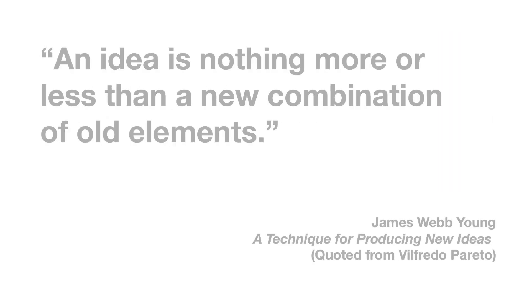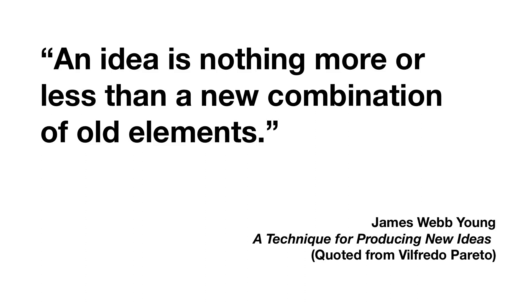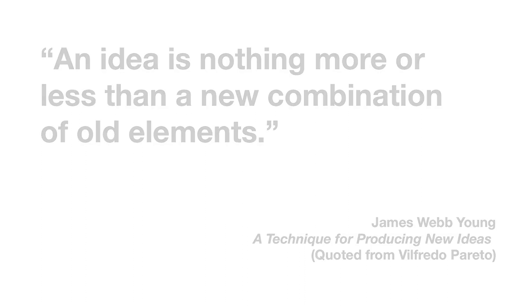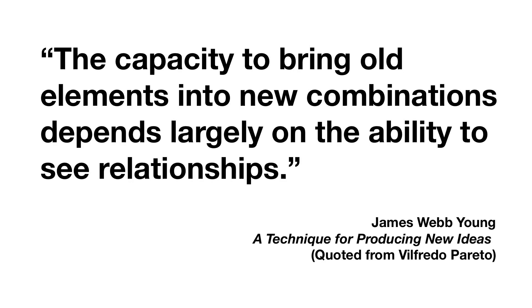James Webb Young writes about the process of brainstorming in his book, A Technique for Producing New Ideas. In this book, he provides two general principles that govern the generation of new ideas. The first is that ideas are nothing more than new combinations of old elements. And second, the capacity to make new combinations depends on the ability and willingness to see relationships.